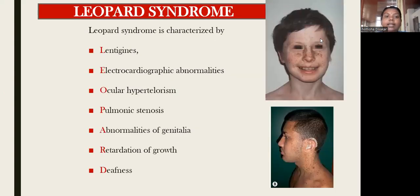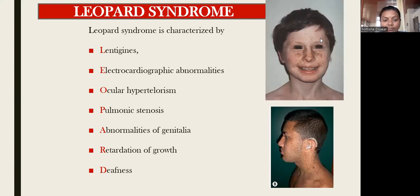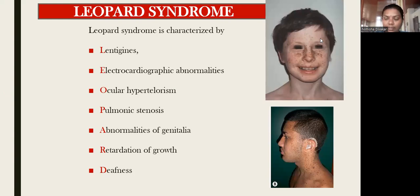Next is LEOPARD syndrome, which is characterized by: Lentigines, Electrocardiographic abnormalities, Ocular hypertelorism, Pulmonic stenosis, Abnormalities of genitalia, Retardation of growth, and Deafness. LEOPARD syndrome thus constitutes around seven conditions.